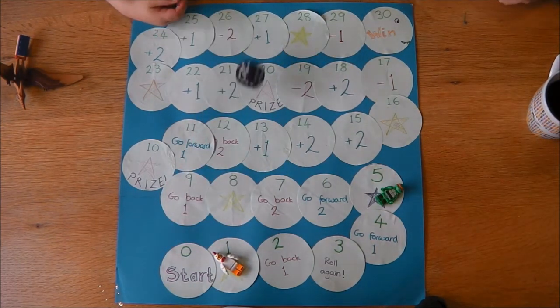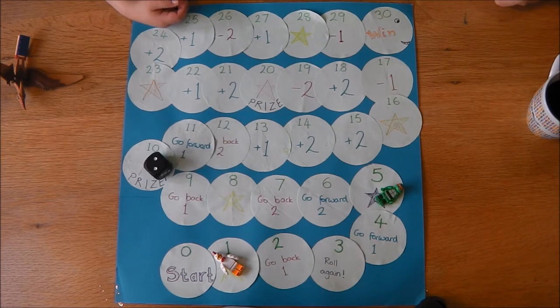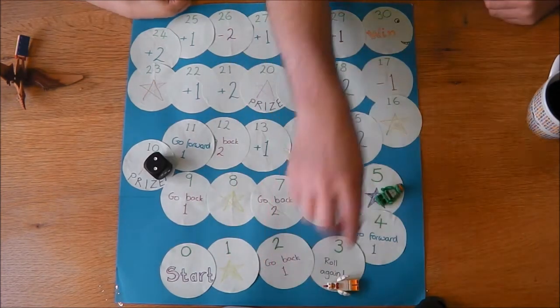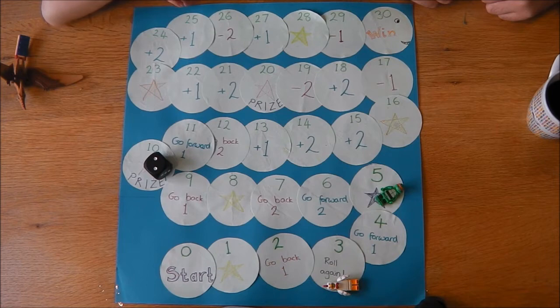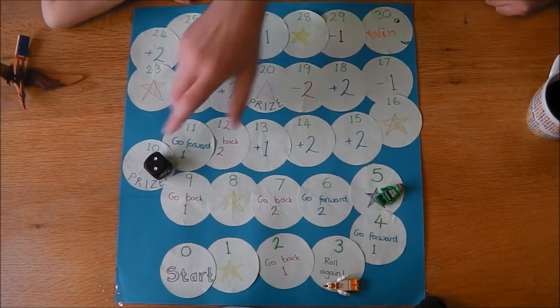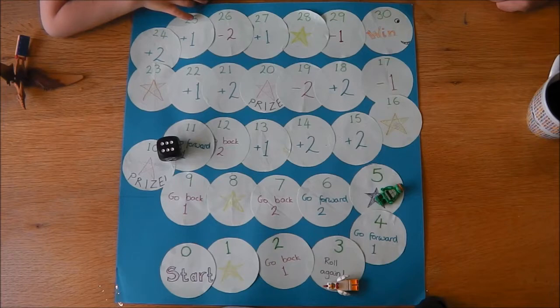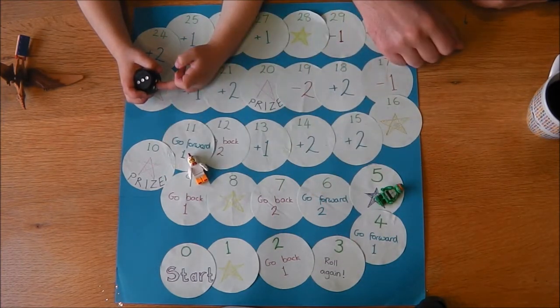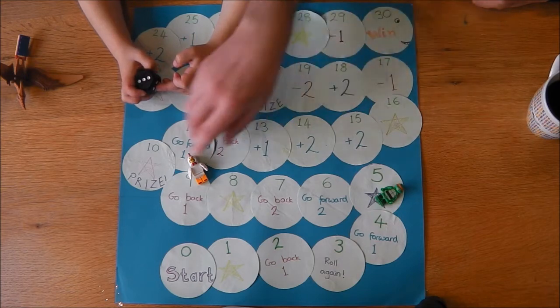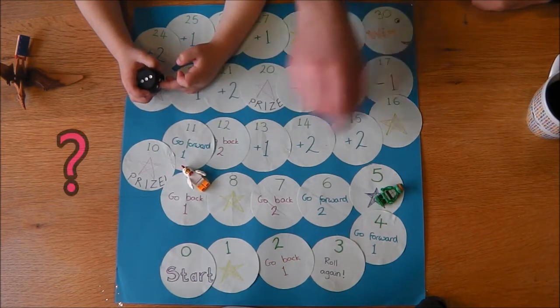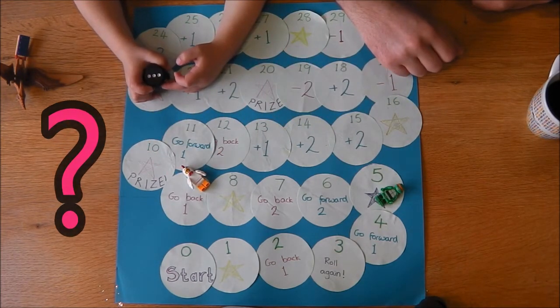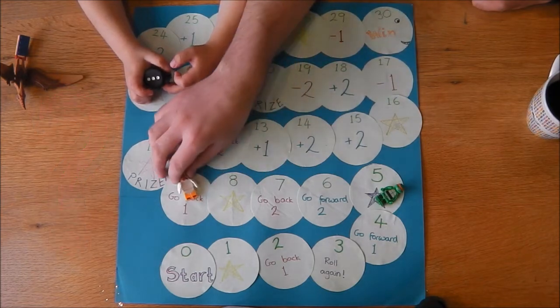Daddy's turn then. 2, landed on 3. Daddy says roll again, so he gets to roll the dice again. 6. Your square says go back 1, Daddy. So if he goes back 1, where is he going to land? 8. Good job.